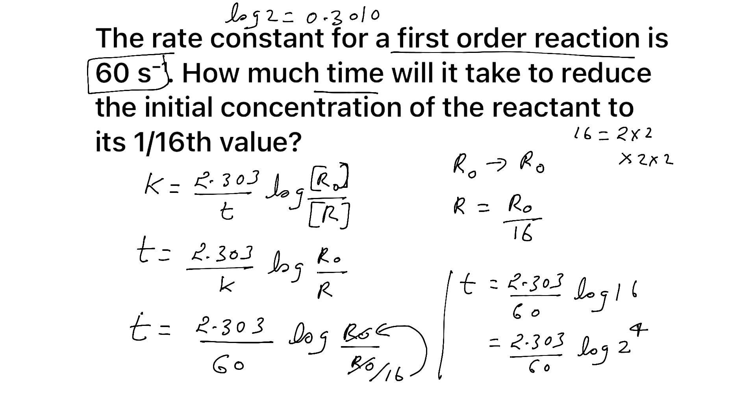Second one is log X raised to N is what? N log X. So what is that here? 2.303 by 60 log 2 raised to 4. You have to write like 4 log 2. Clear. Log 2 raised to 4, you have to write like 4 log 2. This is the rule. Log X raised to N is N log X.